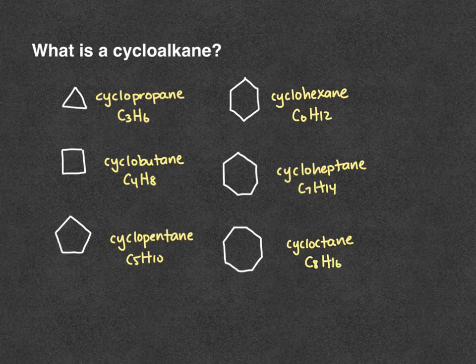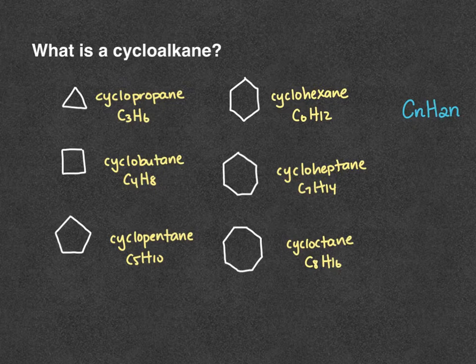With these you can notice the general formula for cycloalkanes is CₙH₂ₙ. So we have that one unit of unsaturation even though these are saturated compounds.